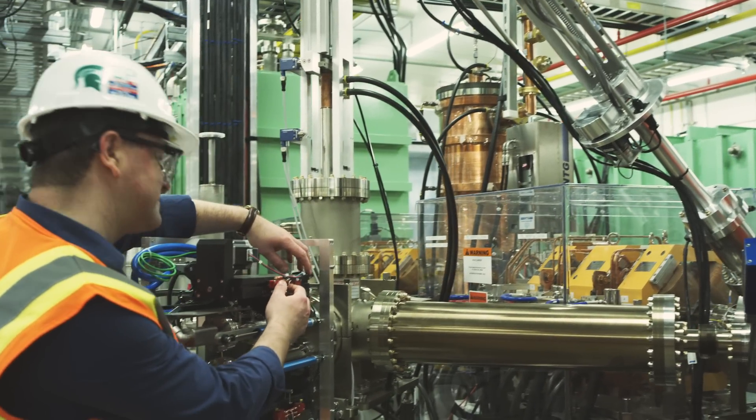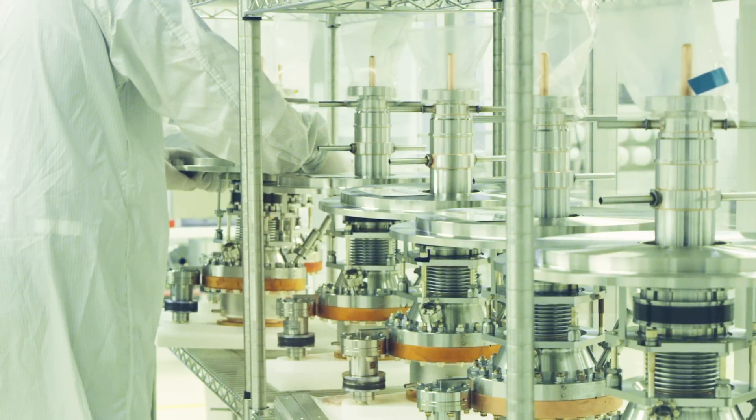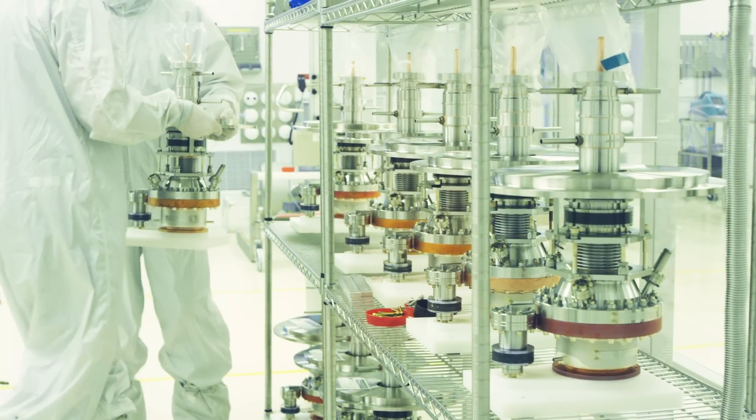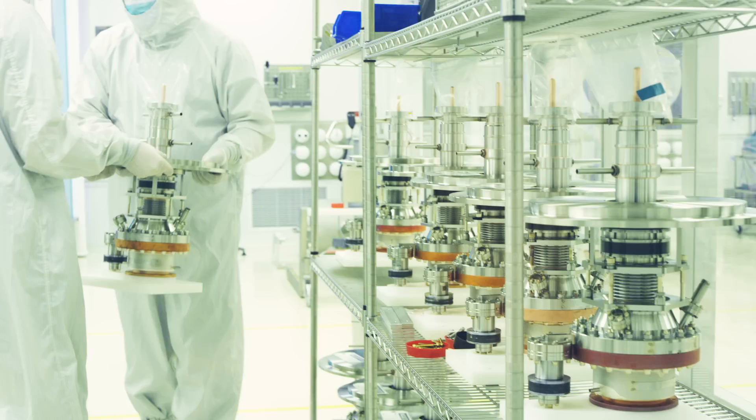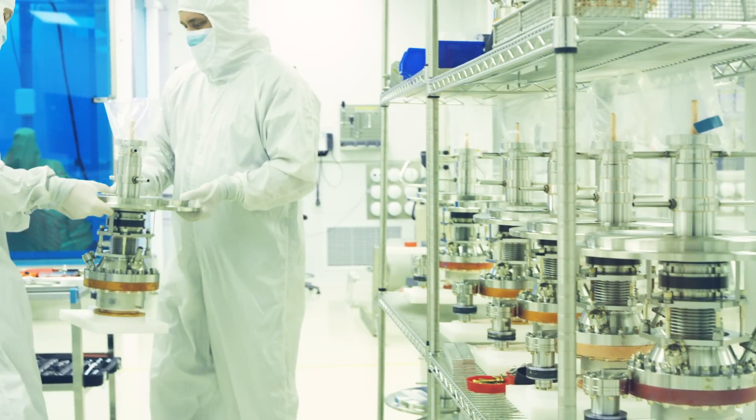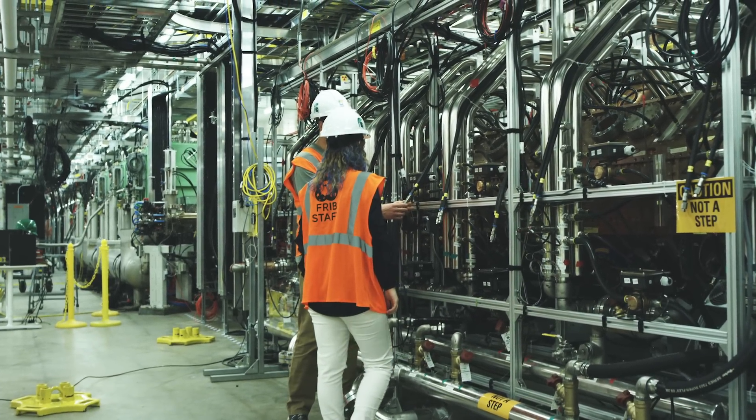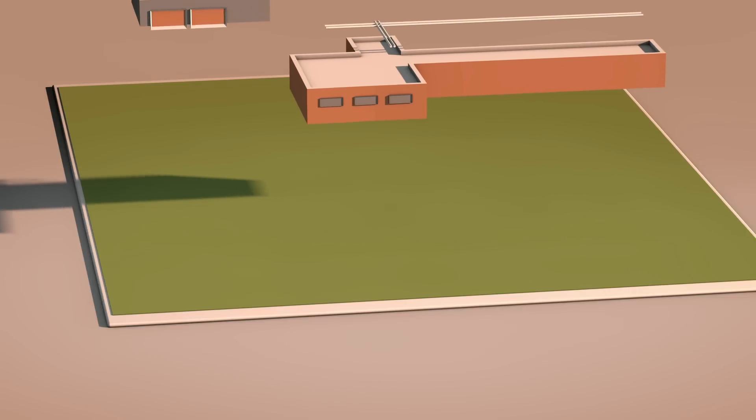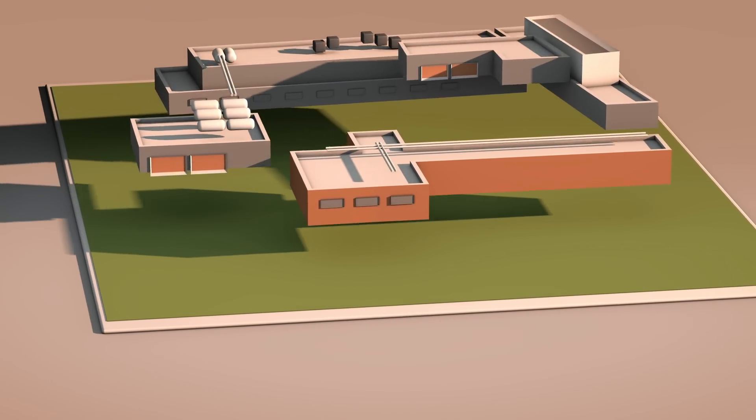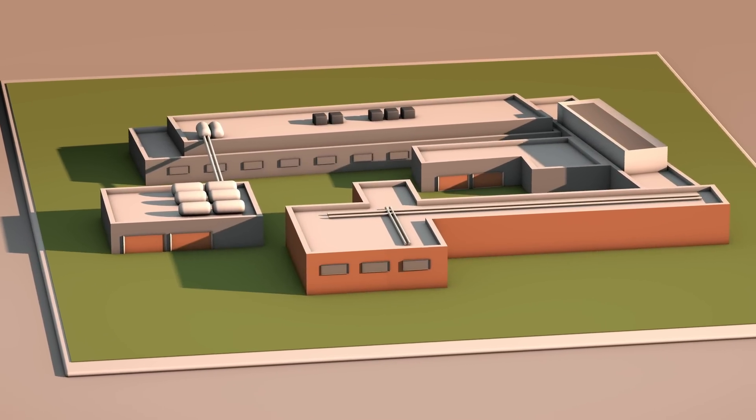FRIB is a discovery machine. It will enable researchers to investigate what holds together the atomic nuclei we're made of and how those elements were created. To understand that, scientists study rare isotopes, the forms of elements that are not normally found in nature.